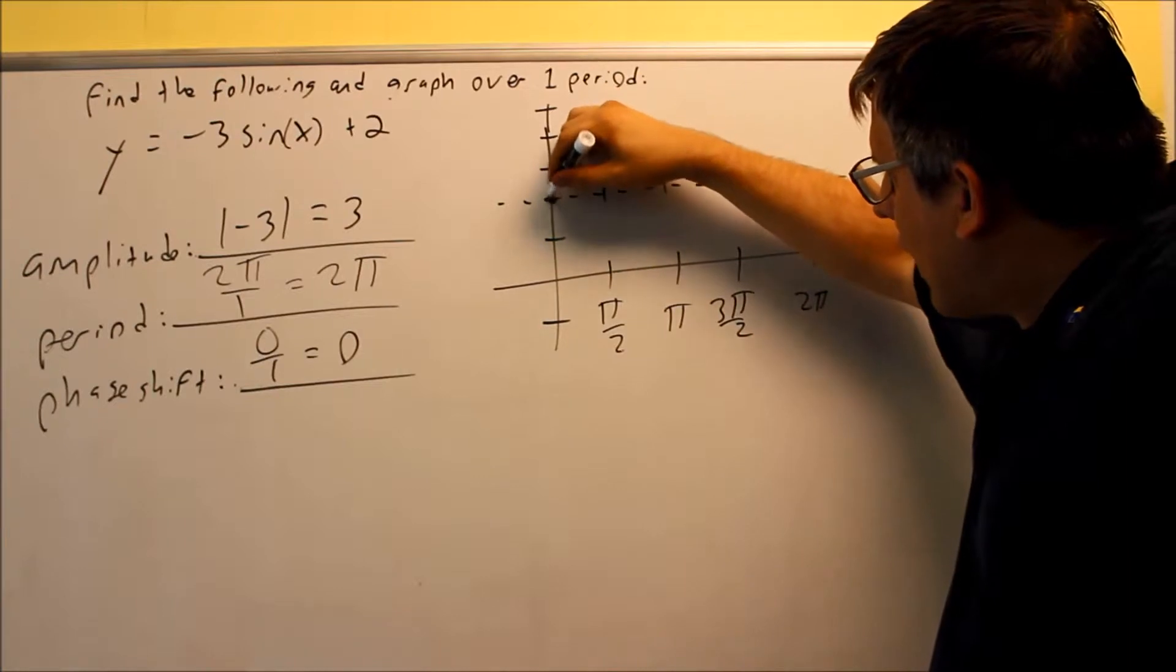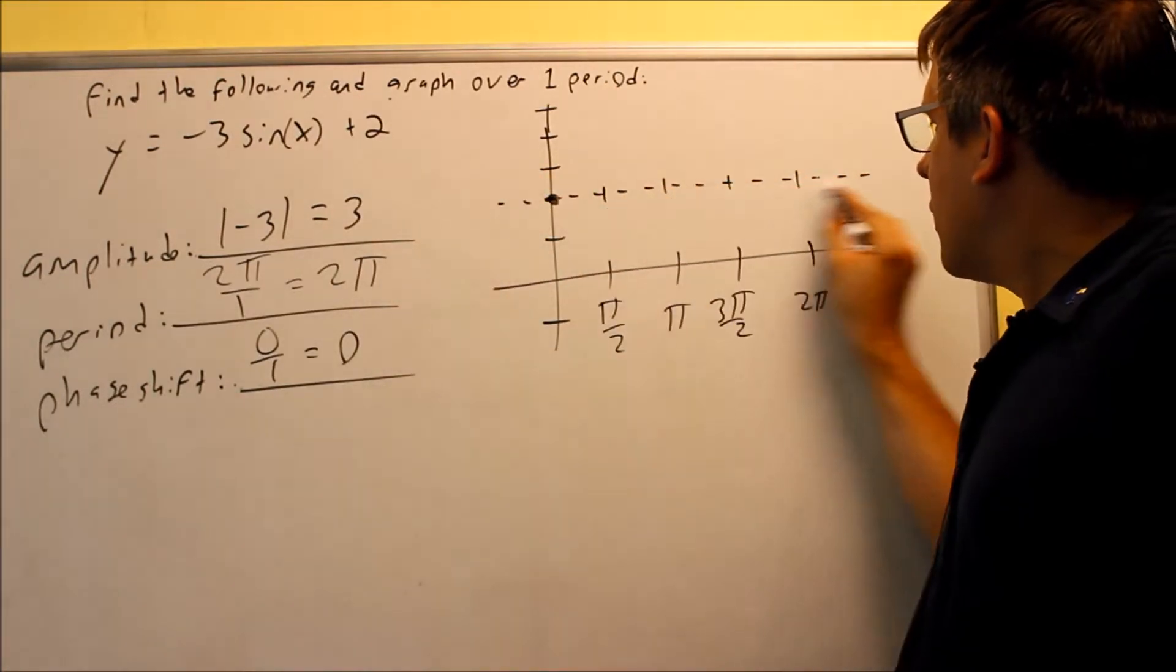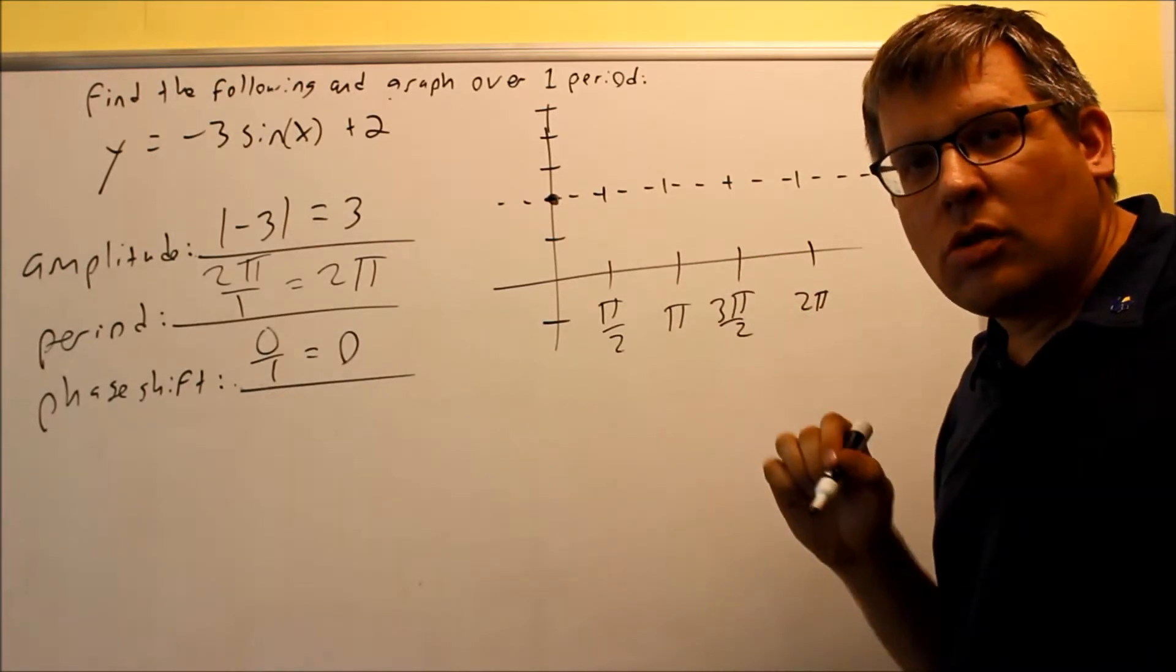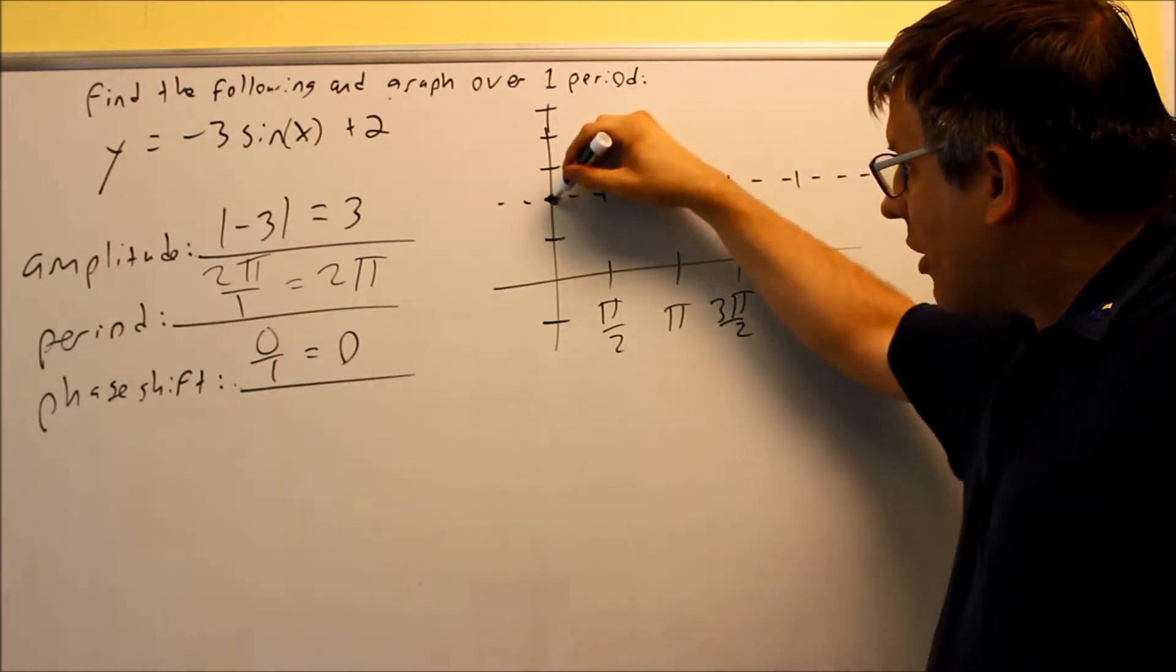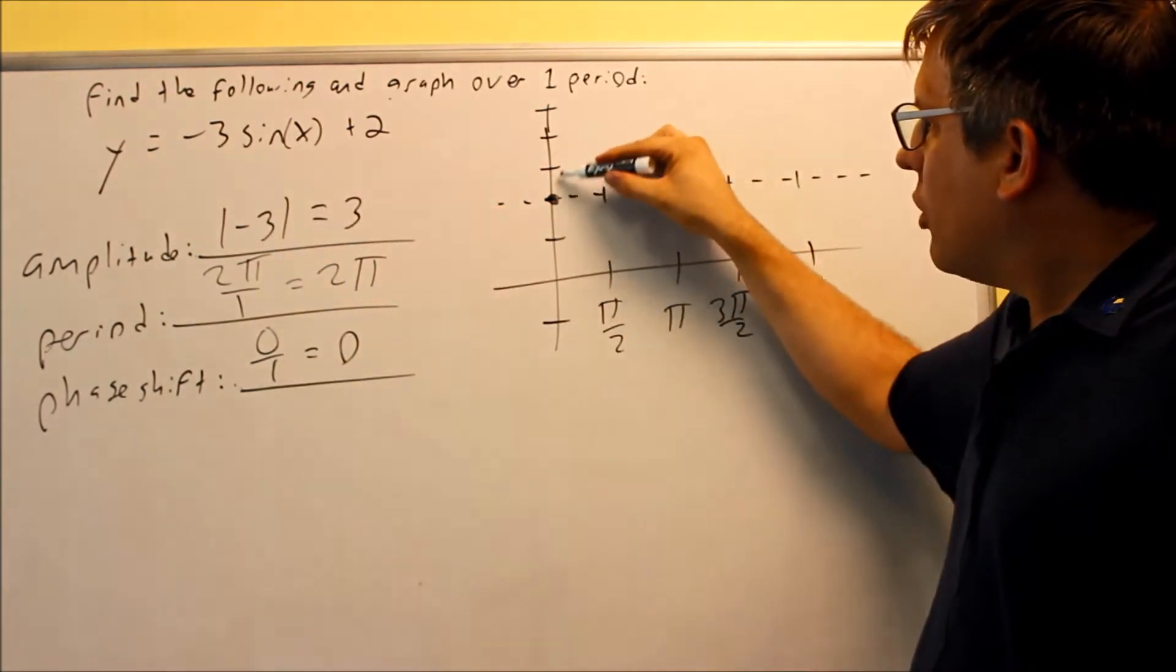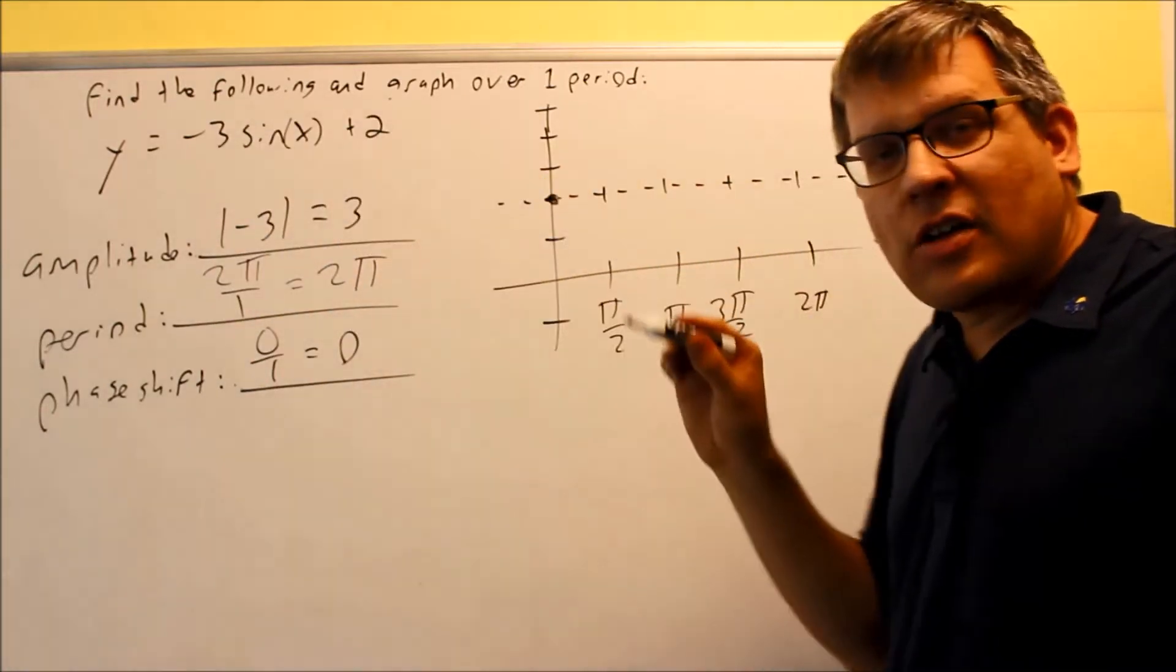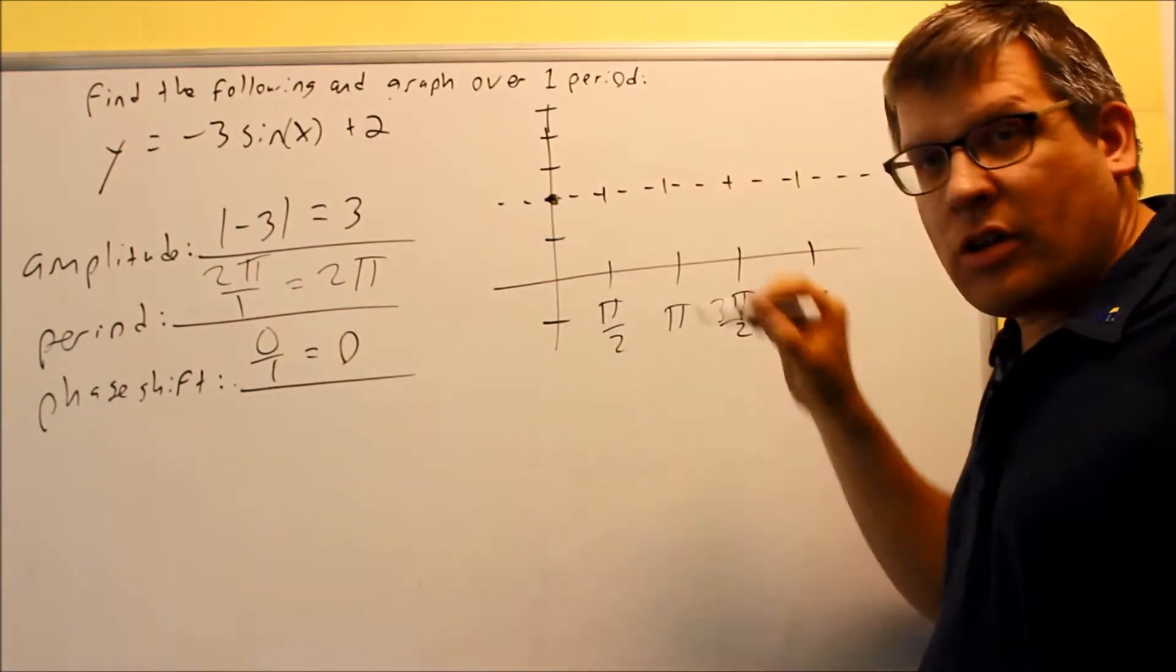The sine graph has to start on the x-axis. Because I moved it up 2 units, this dotted line becomes my new x-axis. I'm starting it right there. It's negative, so sine graphs normally go up for positive, but because of the minus 3, we're going down instead.